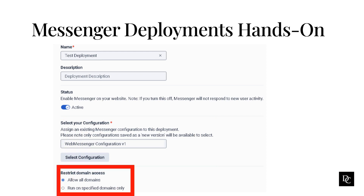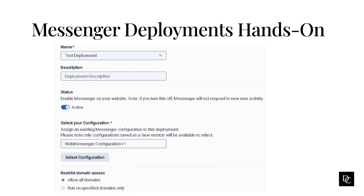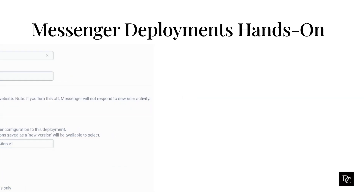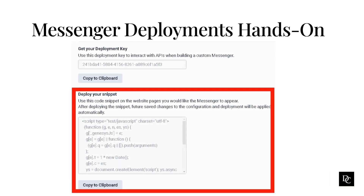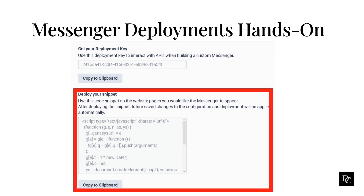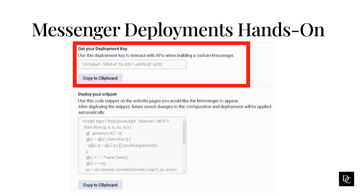Under Restrict Domain Access, determine whether to allow all domains or restrict the domains on which you want to deploy the snippet. Under Select Your Architect Flow, select a published inbound message flow. Click Save. After saving, click back into the deployment you just created, scroll down, and to deploy your snippet, click Copy to Clipboard. Paste the snippet to the head tag of all your webpages. To use the deployment key with your custom messaging client, configure it in your SDK.